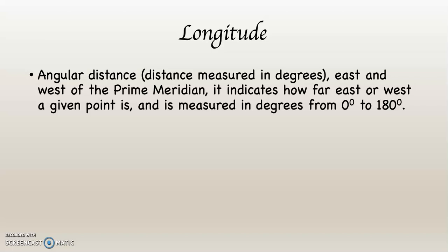Longitude, just like latitude, is angular distance, meaning that it's measured in degrees. East and west of the prime meridian, it indicates how far east or west a given point is, and it's measured in degrees from 0 to 180. This is a system of limited counting. You can count twice as much with longitude than you could with latitude. Nevertheless, it is a limited system.